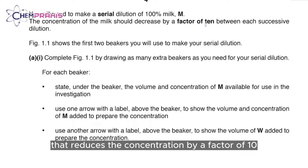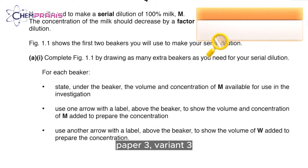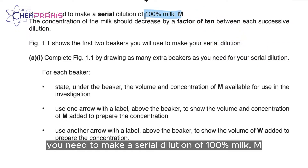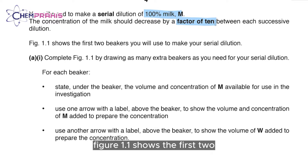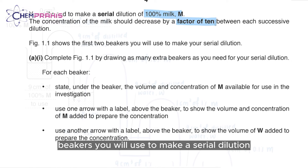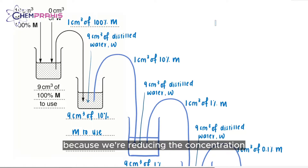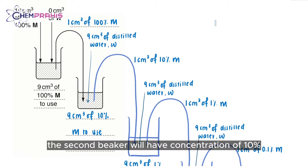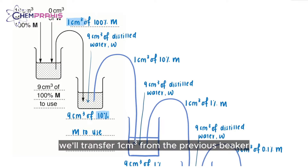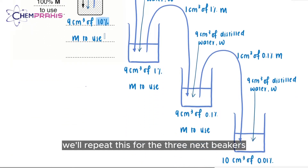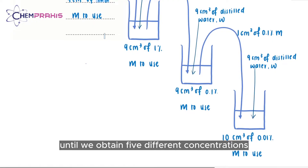For a serial dilution that reduces the concentration by a factor of 10, we'll look at the example in May-June 2019 paper 3 variant 3. You'll need to make a serial dilution of 100% milk. The concentration of the milk should decrease by a factor of 10 between each successive concentration. Because we're reducing the concentration by a factor of 10, the second beaker will have a concentration of 10%. For this kind of serial dilution, we'll transfer 1 cm³ from the previous beaker and add 9 cm³ of distilled water. We'll repeat this for the next 3 beakers until we obtain 5 different concentrations.